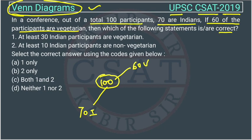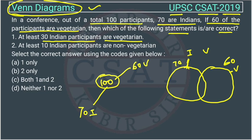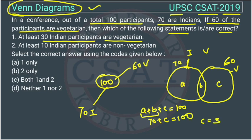Now we have to find which statement is correct. Statement A: at least 30 Indian participants are vegetarian. We will draw a Venn diagram of Indians and vegetarians. Indians are total 70 and vegetarians are total 60. This circle represents vegetarians and this circle represents Indians. So a plus b plus c equals 100, and a plus b equals 70, therefore c equals 30.